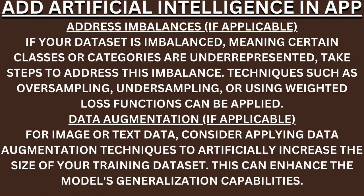Address imbalances if applicable. If your dataset is imbalanced — meaning certain classes or categories are underrepresented — take steps to address this imbalance. Techniques such as oversampling, undersampling, or using weighted loss functions can be applied. Data augmentation. For image or text data, consider applying data augmentation techniques to artificially increase the size of your training dataset. This can enhance the model's generalization capabilities.